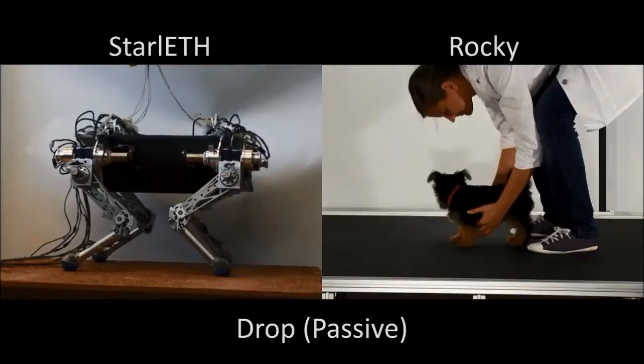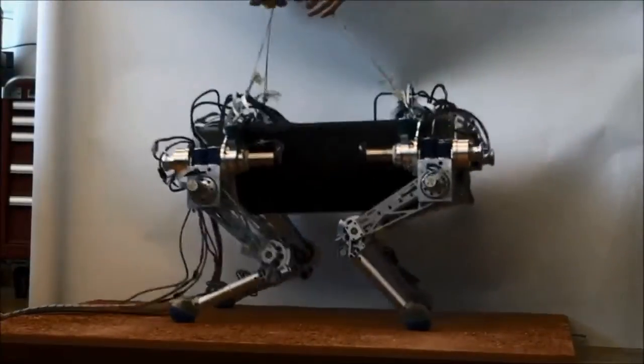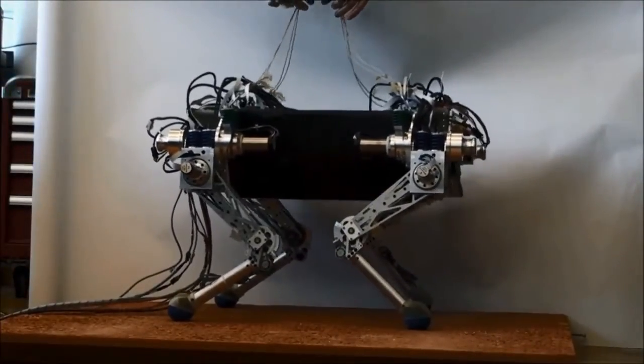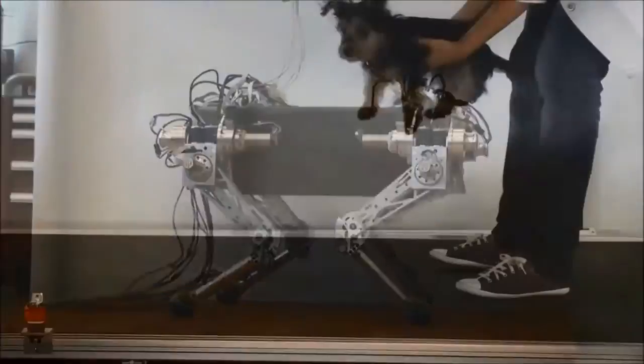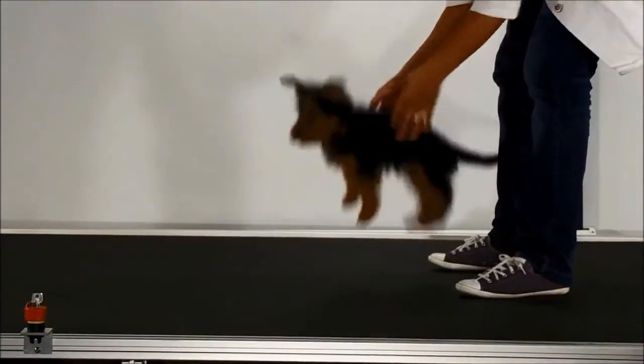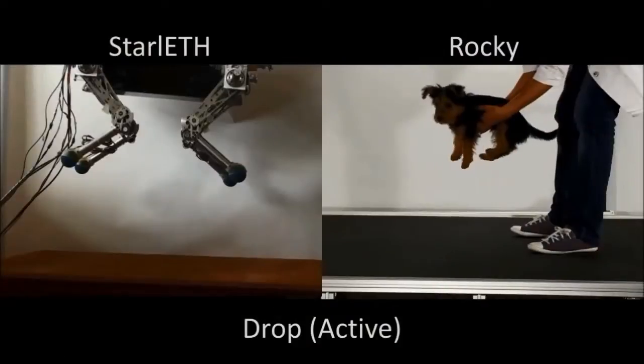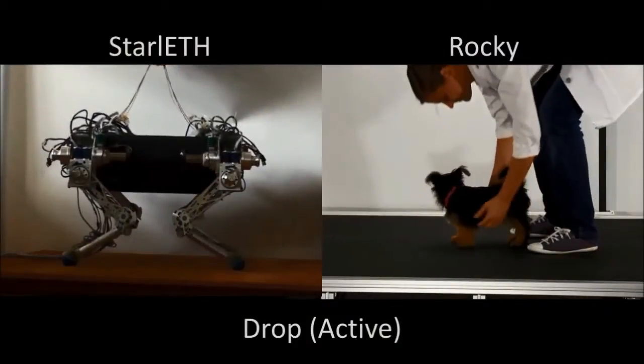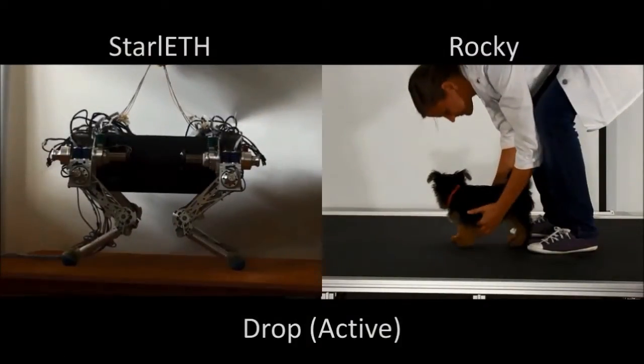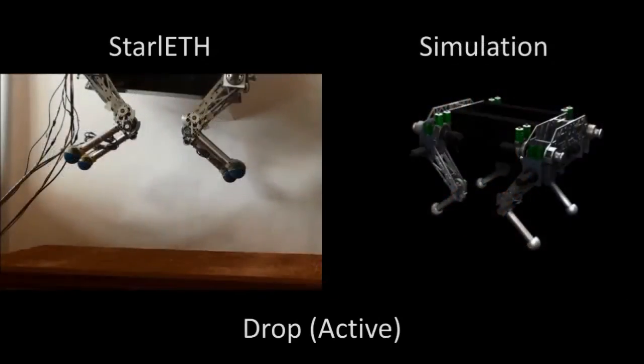This is the Starleth robot being dropped with the motor stopped. It is passively responding as the springs return to equilibrium and the robot bounces. This passive response is easier to program but the body kinematics are harder to predict. This is the active drop where the leg actively compensates the spring deflection using electric motors. This time, Starleth mimics the response of a real dog dropped beside it.